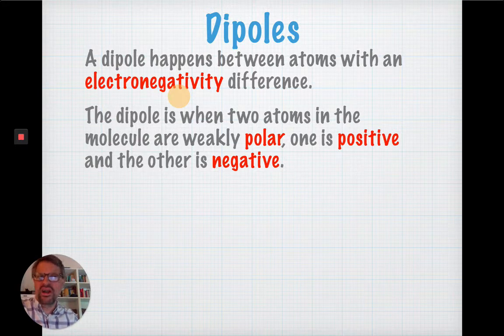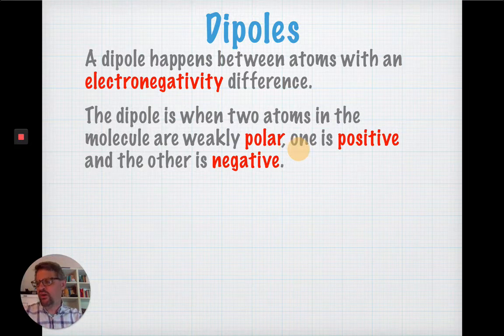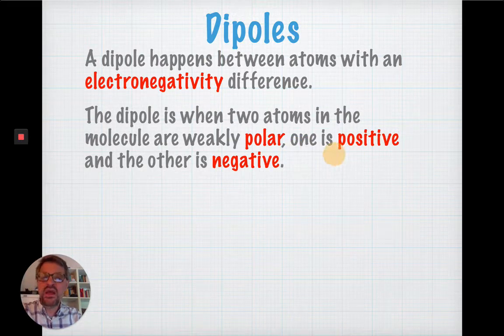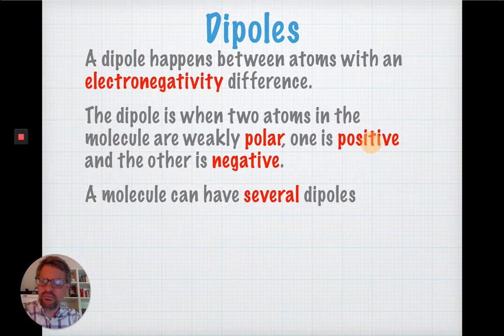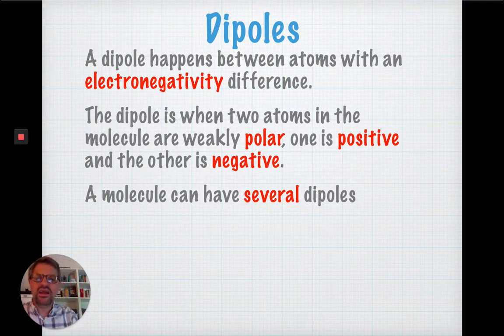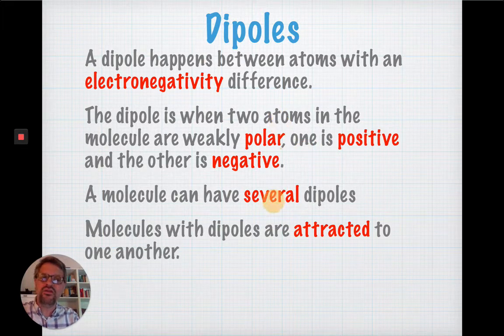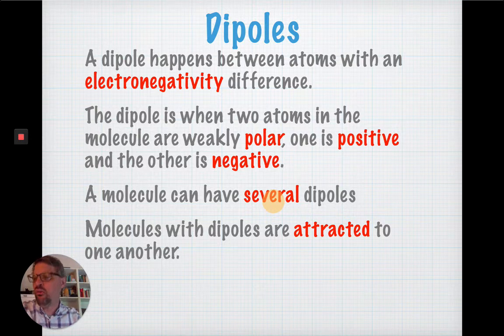So, it ends up being more negative most of the time because it's hogging electrons. The other atom then is left with electrons less of the time and it has a positive charge most of the time. A molecule, large molecules, can have several dipoles. A dipole refers to one bond between two atoms. And if it's polar, we call it a dipole.